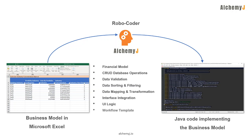AlchemyJ has a workflow template. You can plug your workflow into your application. It also has a business rule template. You can define business rules and plug these rules into your applications.